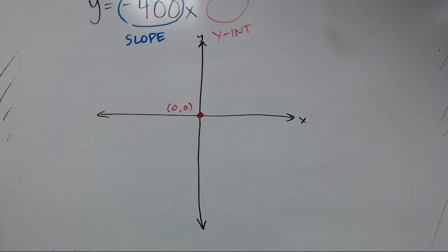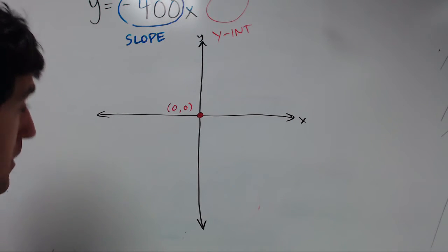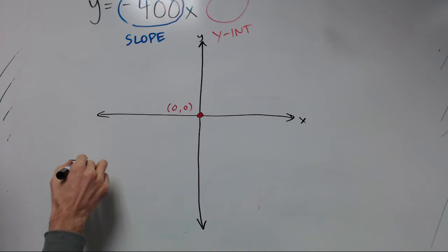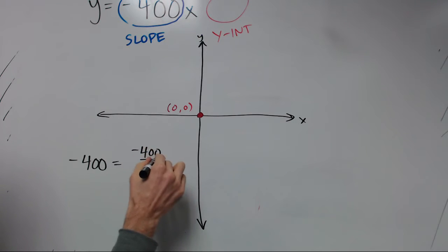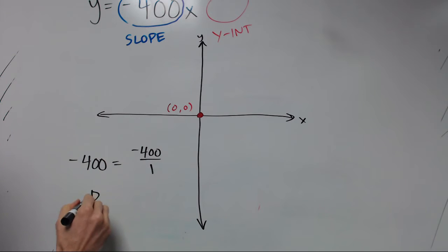Now let's take a look at this slope. I mentioned before that if the slope is not a whole number, you want to make it a whole number. So this slope of negative 400, we want to write that as negative 400 over 1. And so that tells us to go down 400 units and to the right 1 unit.